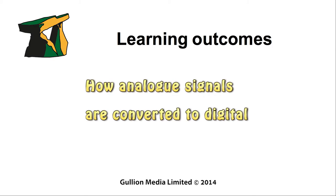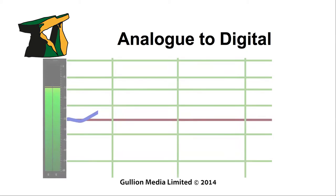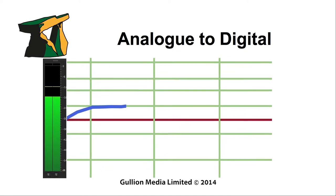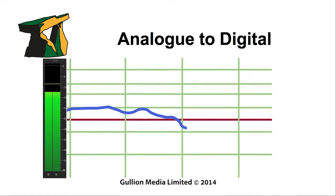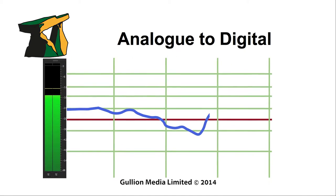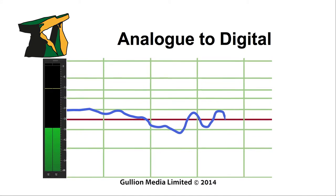In this session we're going to look at how analog signals are converted to digital. When recording audio digitally, the analog sound wave needs to be converted into a digital signal.